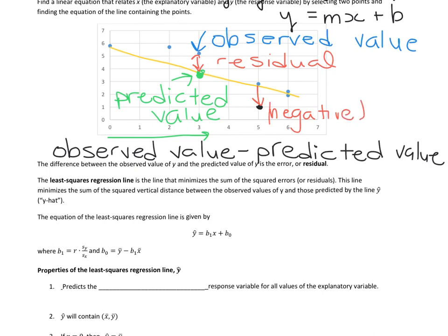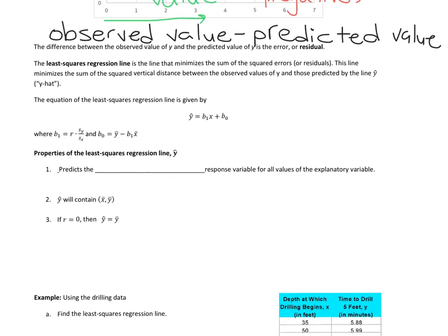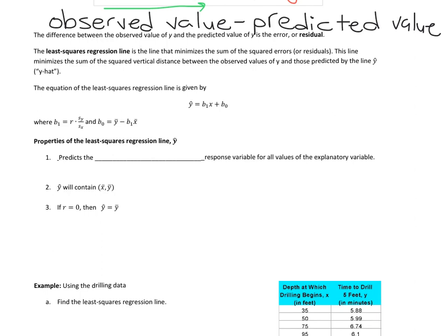What line should we choose? The best one is called the least squares regression line. It's the line that minimizes the sum of the residuals. This line minimizes the sum, and they actually look at the squares so it doesn't accidentally add up to zero. So they square the errors. The residuals is the difference between the observed values minus the predicted values. And the notation we use for that is y hat. Y hat symbolizes the least squares regression line.